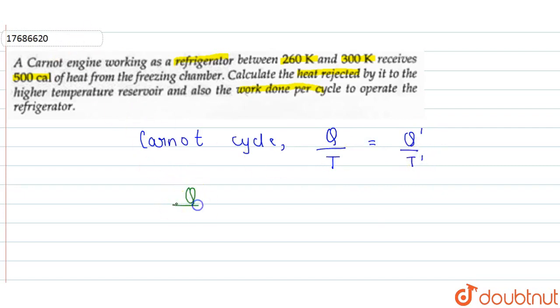So Q over T: T is 300 Kelvin. Q prime over T prime: Q prime is 500 calories received, and T prime is 260 Kelvin. So we have Q over 300 equals 500 over 260.